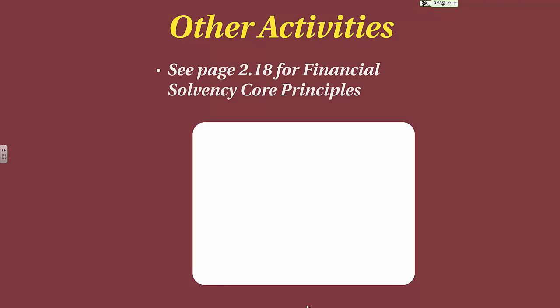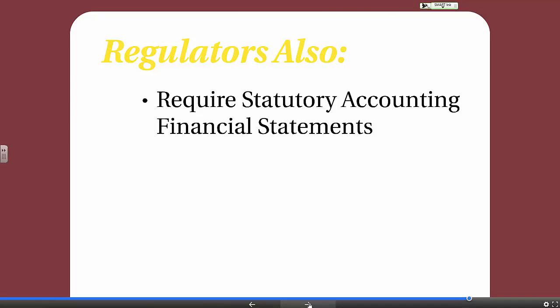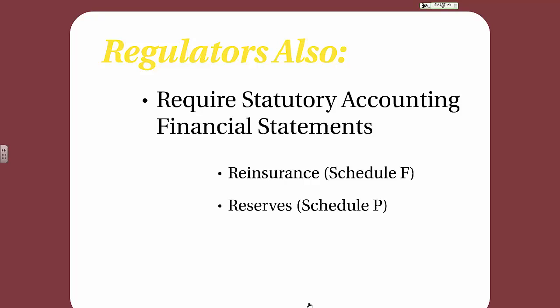Let's look at some other regulatory activities, mostly related to financial solvency — and please look at page 2.18 of your text for the financial solvency core principles to supplement this. Regulators require statutory accounting financial statements, which are different from GAAP accounting. In terms of financial solvency, regulators pay particular attention to reinsurance — which is in Schedule F of the financial statements — reserves, which are in Schedule P, and the insurer's investments. All three of these can have a significant impact on an insurance company's solvency — and looking back at causes of financial insolvency, reinsurance, inadequate reserves, and investments all contributed to past insurance company insolvencies.